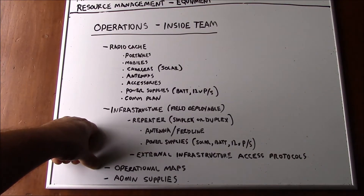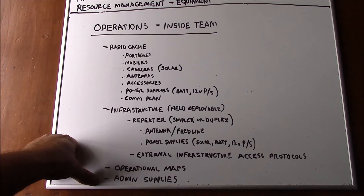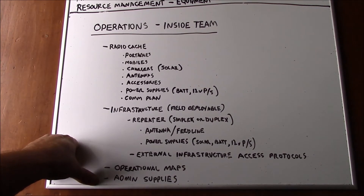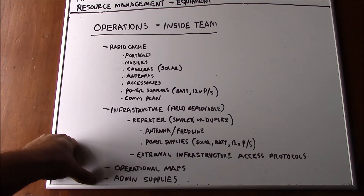You want to have maps of your operational area — not only for tracking where your workforce is operating for accountability reasons, but also to constantly evaluate your communications coverage and determine if any changes to your communications plan or redeployment of your field deployable infrastructure are necessary. And again, admin supplies — paper, pencils, rulers, etc. It's extremely important to keep notes. Whether it's just a notepad and a pencil, it's always important to have some augmentation to your memory that you have ready access to.